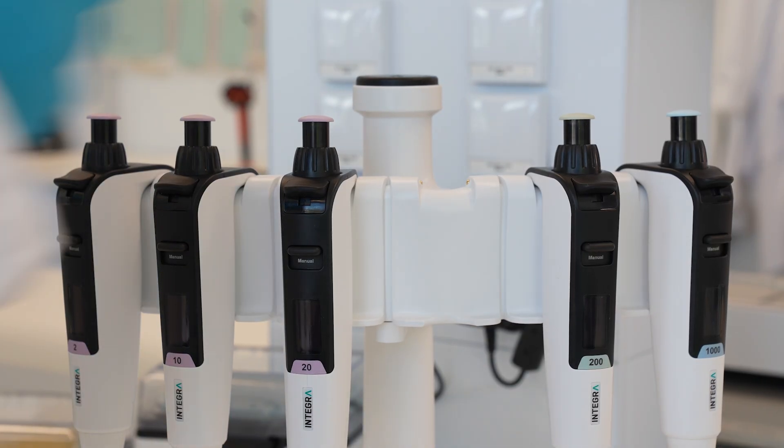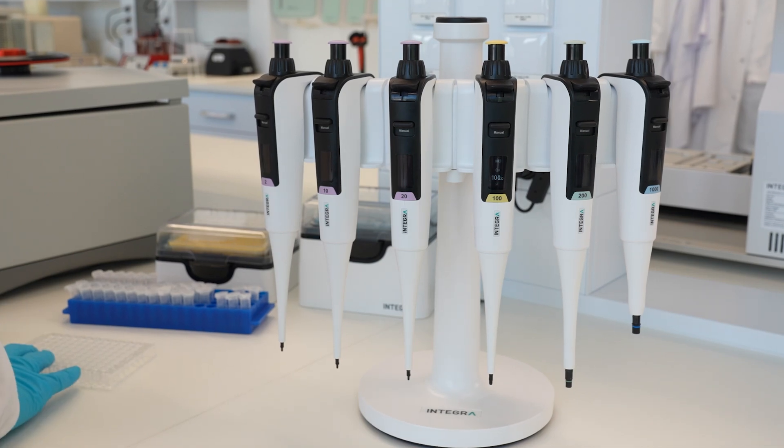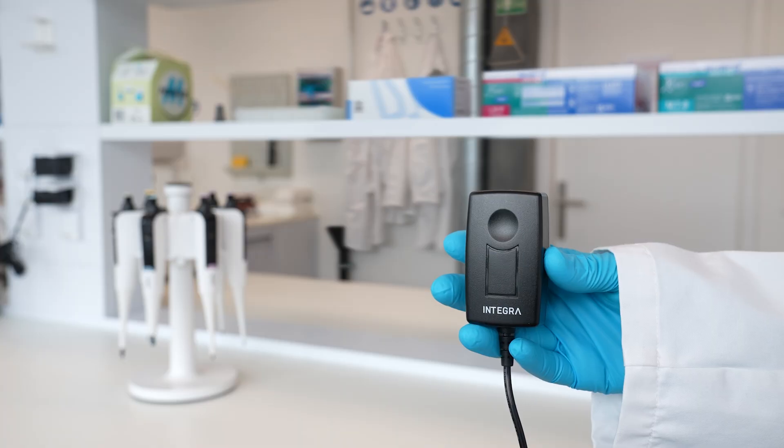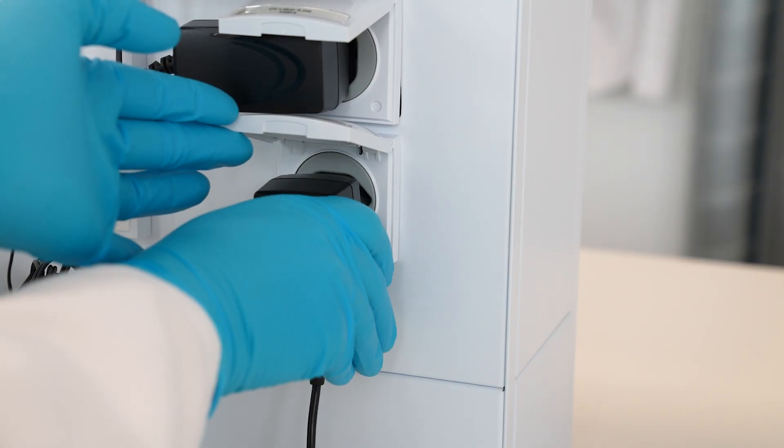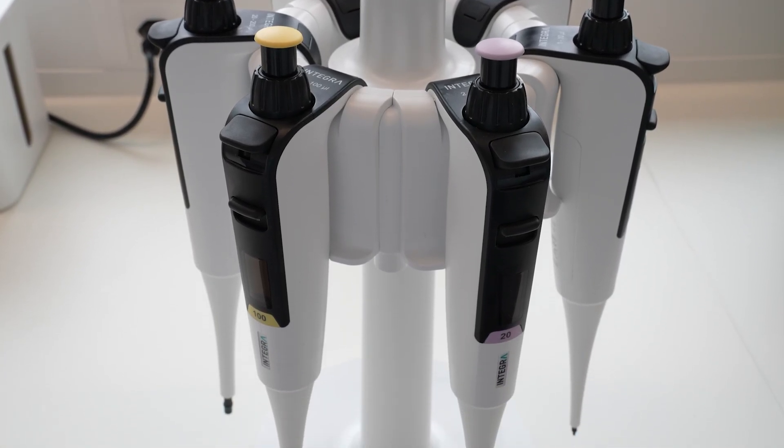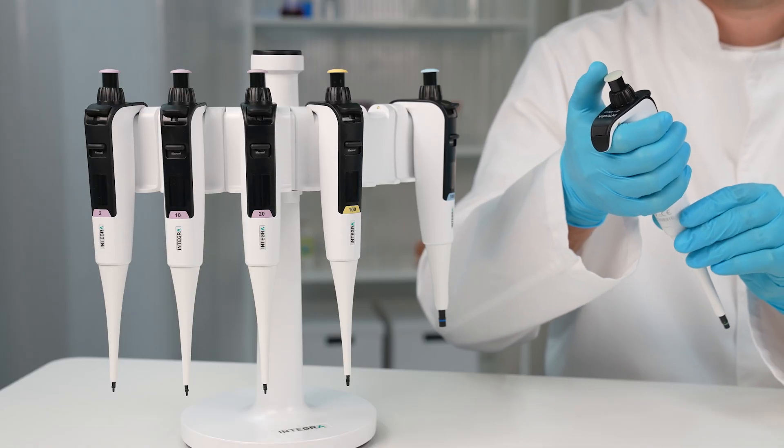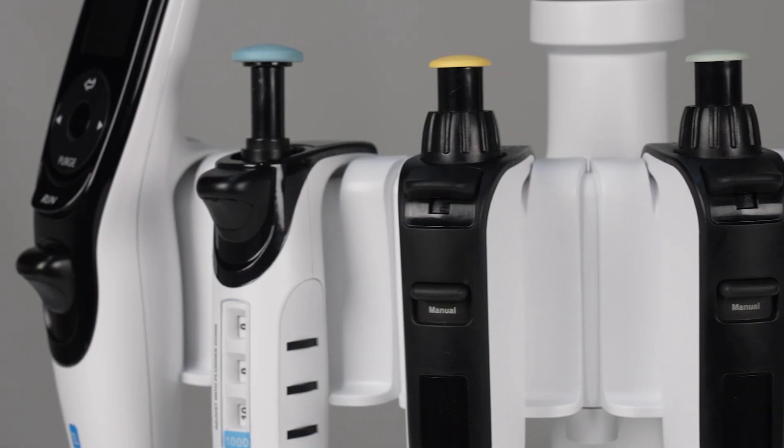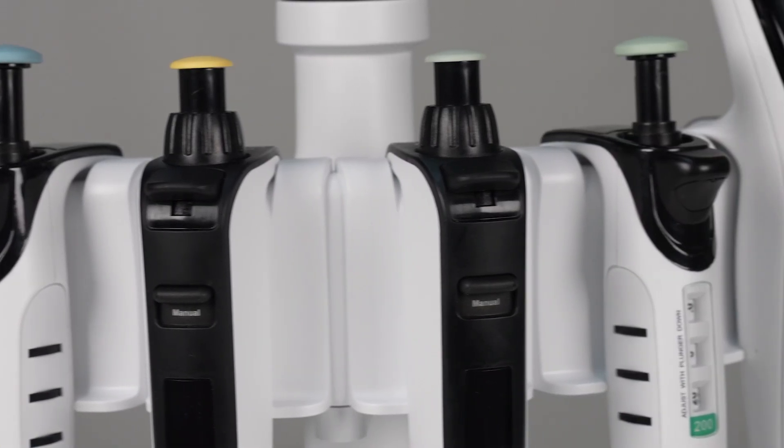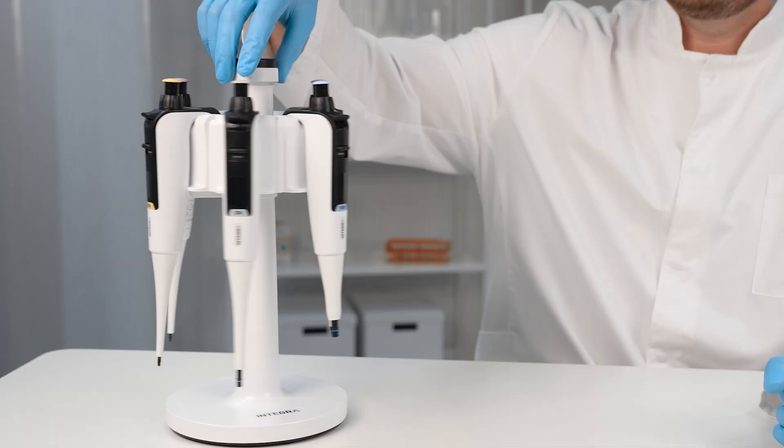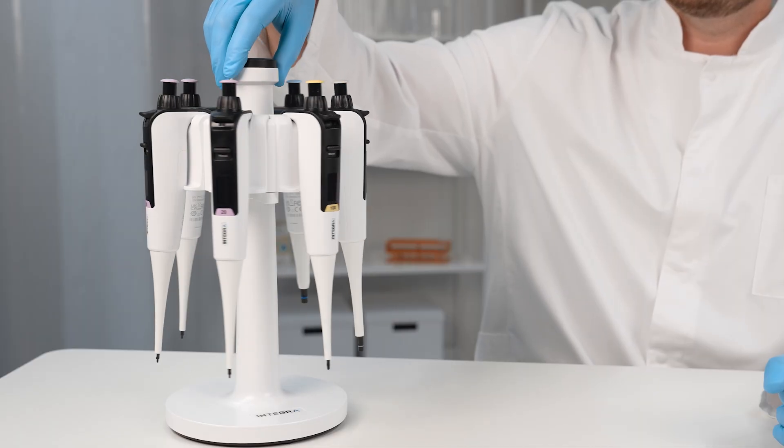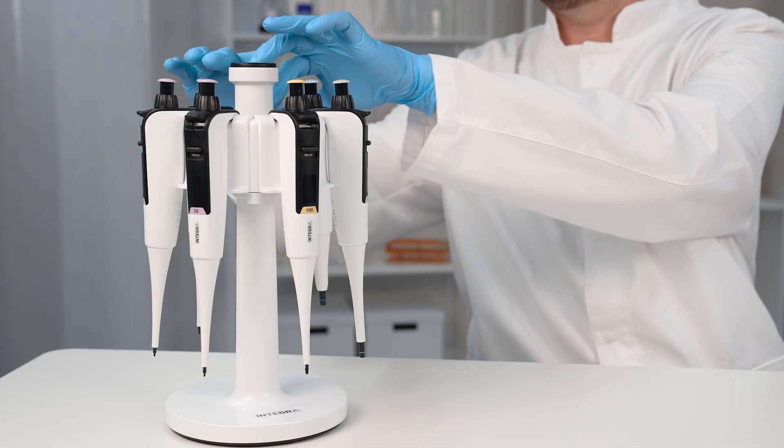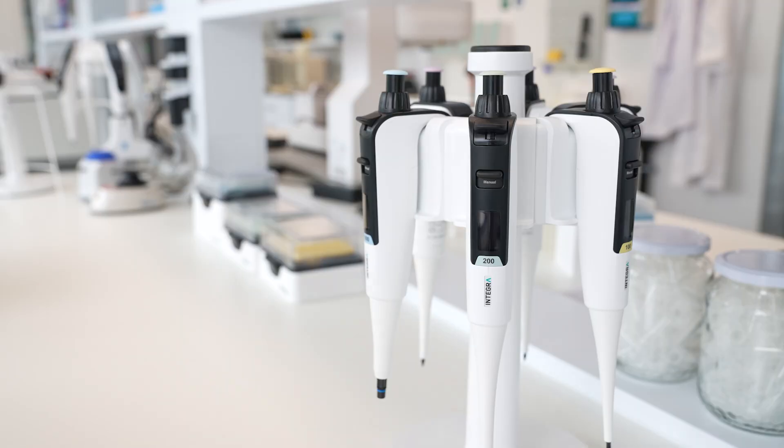When not in use, Switch can be stored on a Flex charging stand. Tidy bench? Check. Charged pipettes? Double check. The versatile and one-of-a-kind Flex charging stand keeps your Switch pipettes organized, charged, and ready for action alongside your other favorite Integra tools. This stand offers complete flexibility in storage—use it as a rotary stand or simply open it up and use a linear stand to more easily grab and switch out your pipettes. However you want to work and store your pipettes, the Flex charging stand offers you exactly that flexibility.